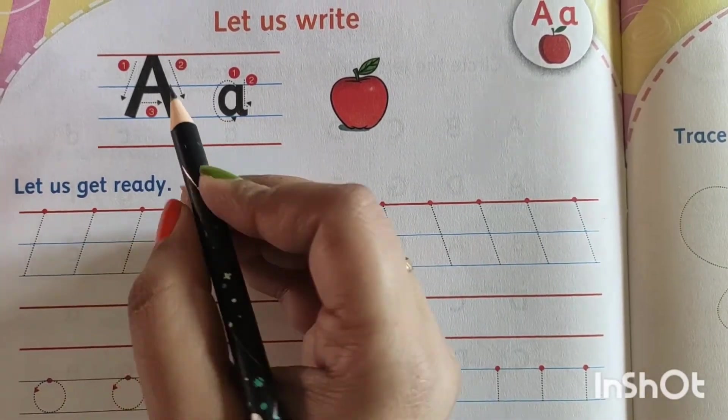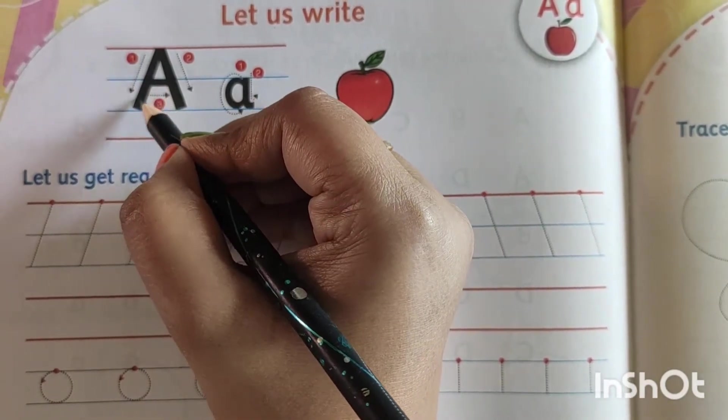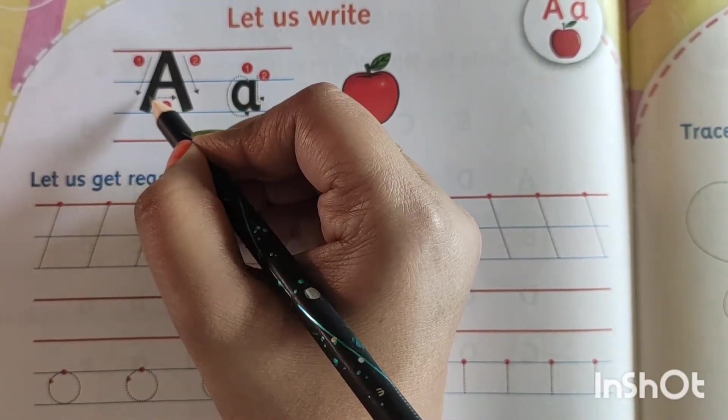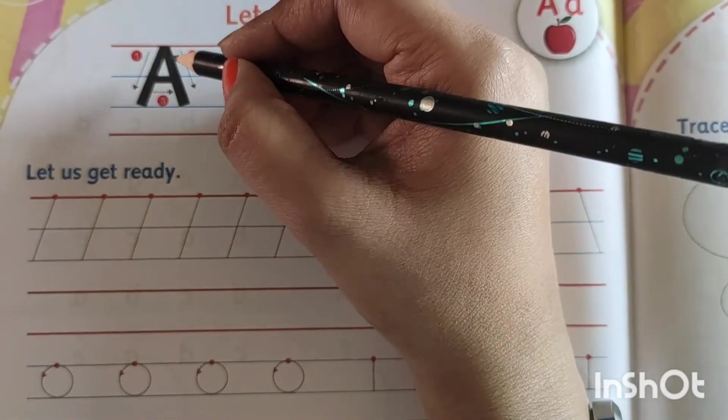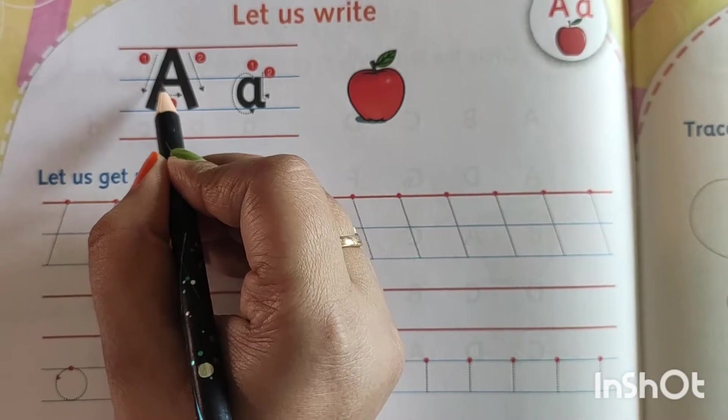And how to write? You see here you have already learnt that slanting line. It goes from up to down. Another one slanting line, it goes up to down. Then the sleeping line.